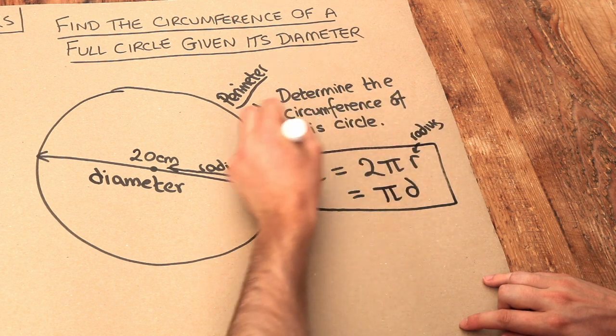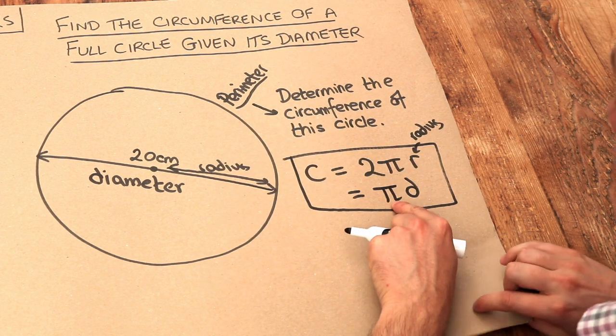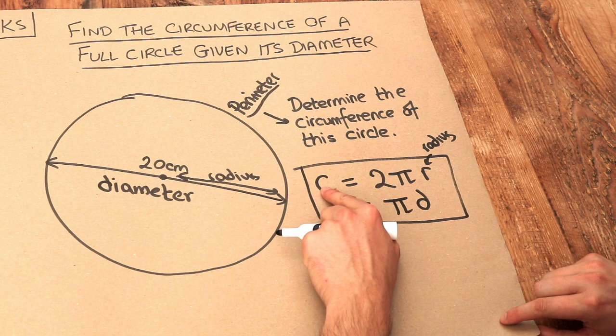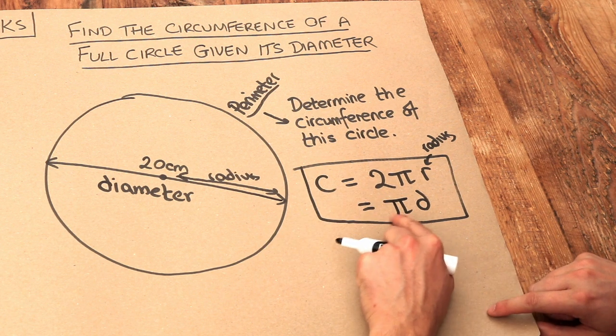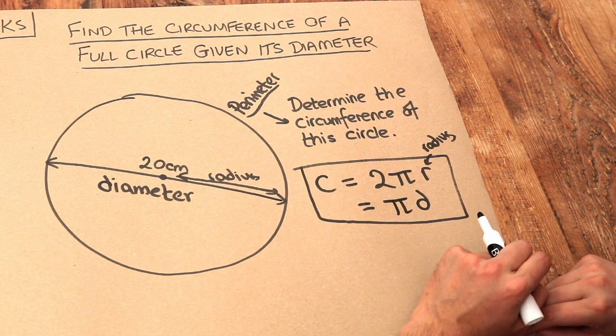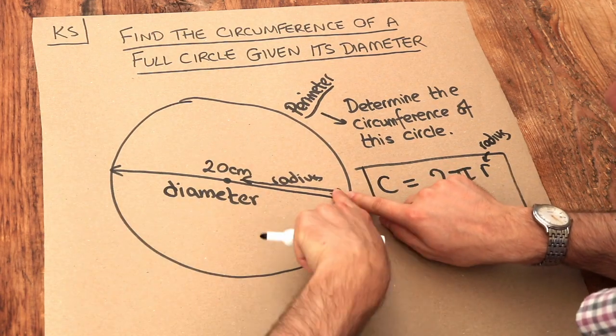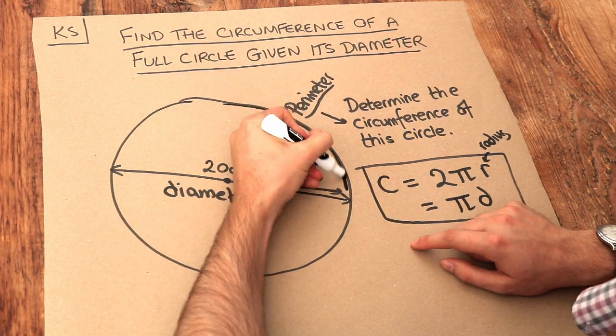And in fact, that's what the definition of this special number pi is. It's basically saying that the circumference of the circle is pi times bigger than the diameter of the circle. Now if you took this diameter of the circle, so it's roughly this length here, can you see?